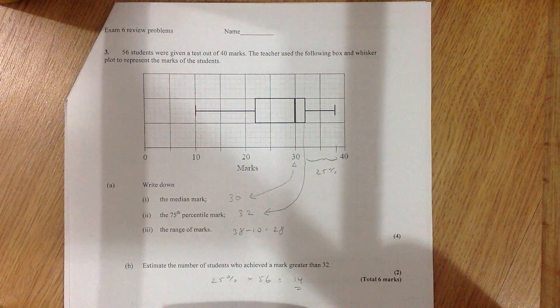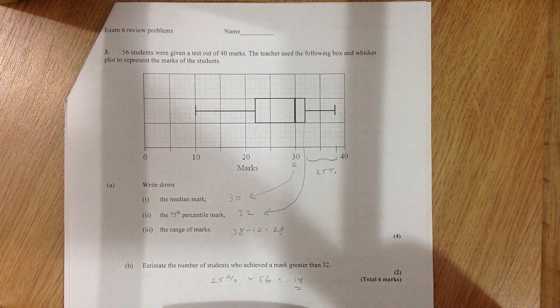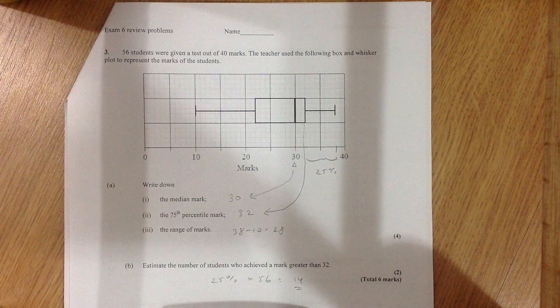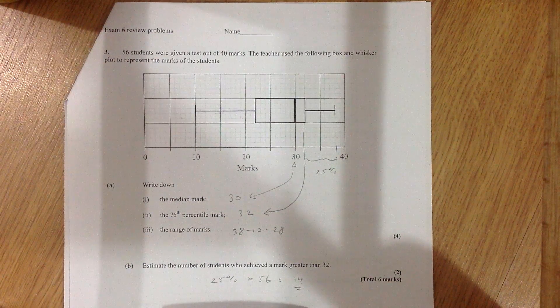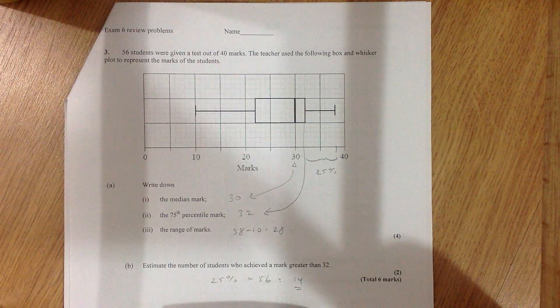Okay, this is exam 6 review, problem 3. So 56 students were given a test out of 40 marks. The teacher used this box and whisker plot to represent the marks of the students.